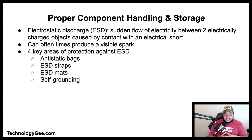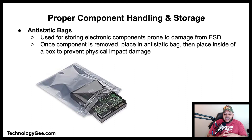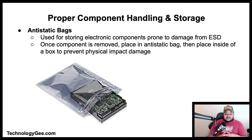Without ESD protection, static electricity will seek to discharge to anything with a different electrical potential, especially metallic items like circuit boards. The four key areas for protection against ESD are: anti-static bags, ESD straps, ESD mats, and self-grounding. An anti-static bag is used for storing electronic components prone to ESD damage. When removing a component from a computer, immediately place it inside an anti-static bag, then inside a protective box to avoid physical impact damage.